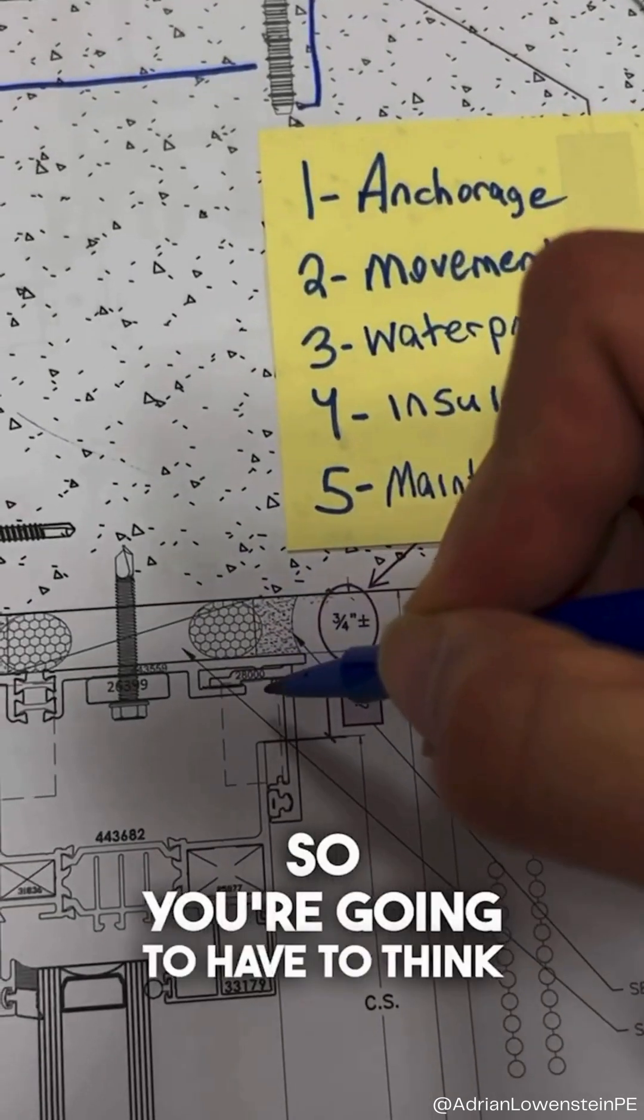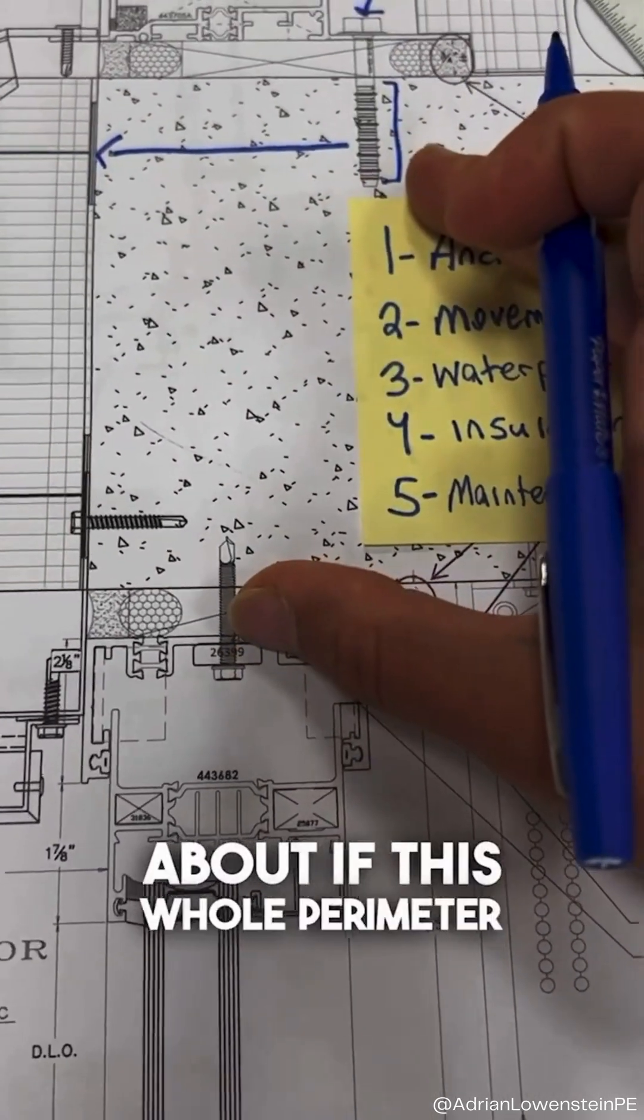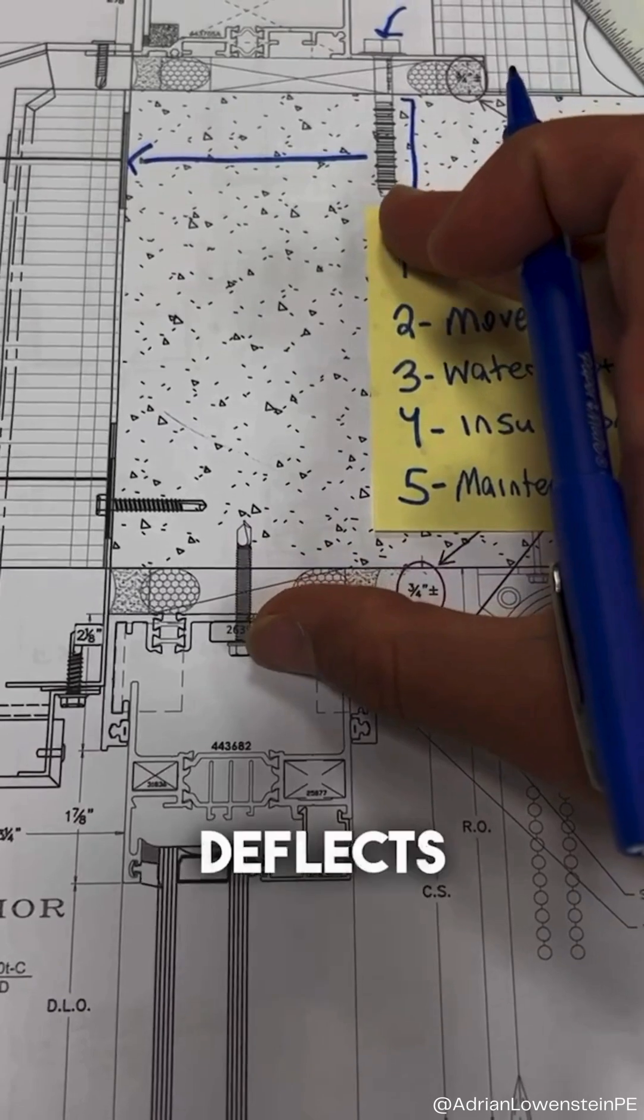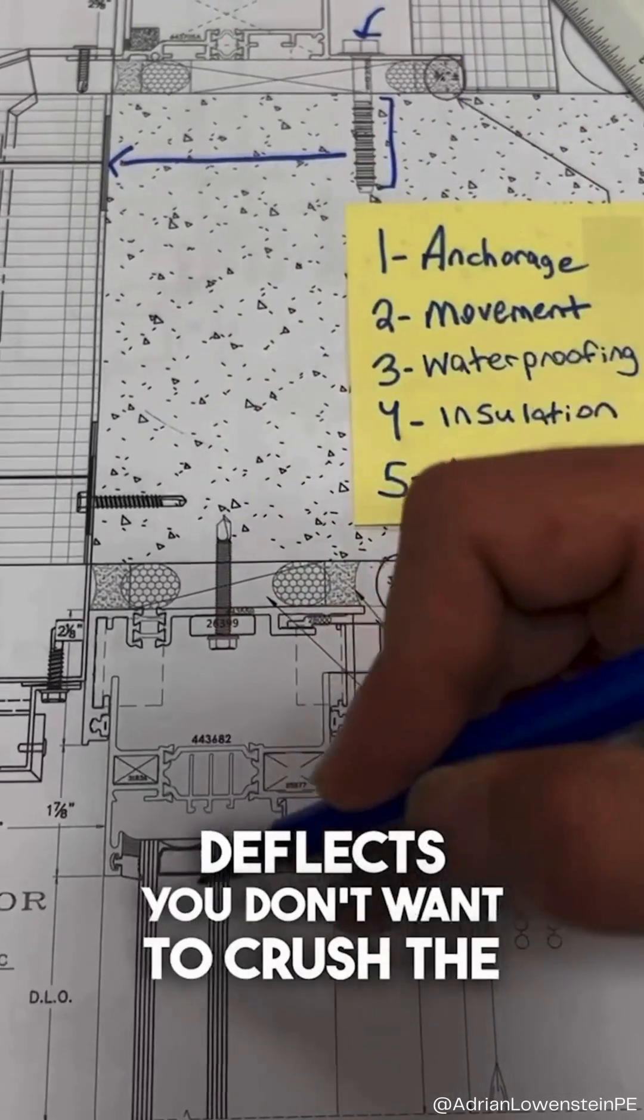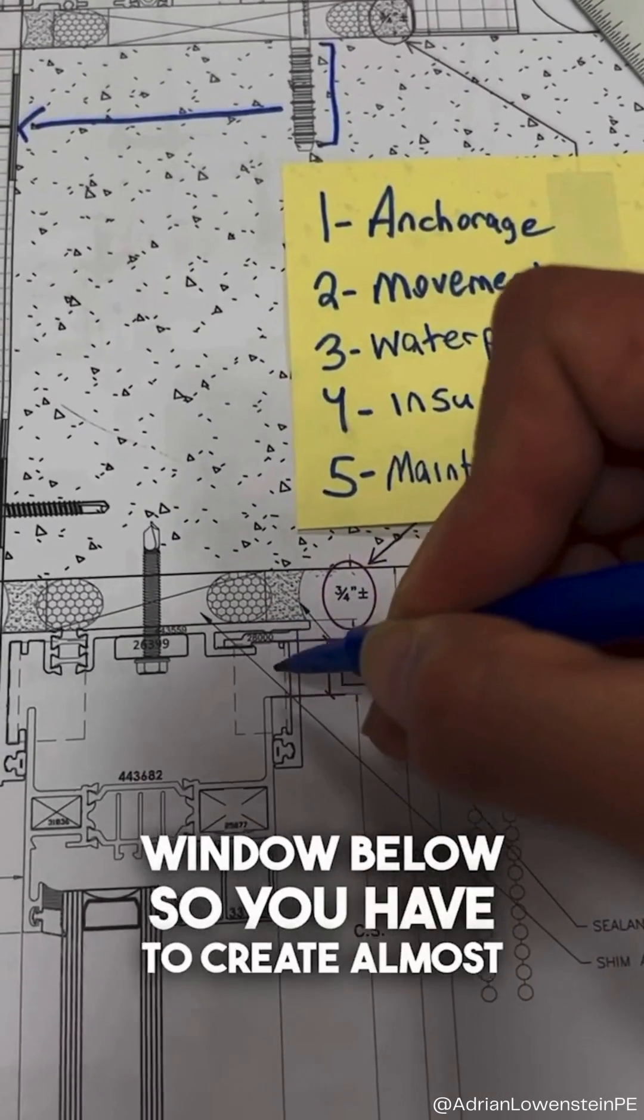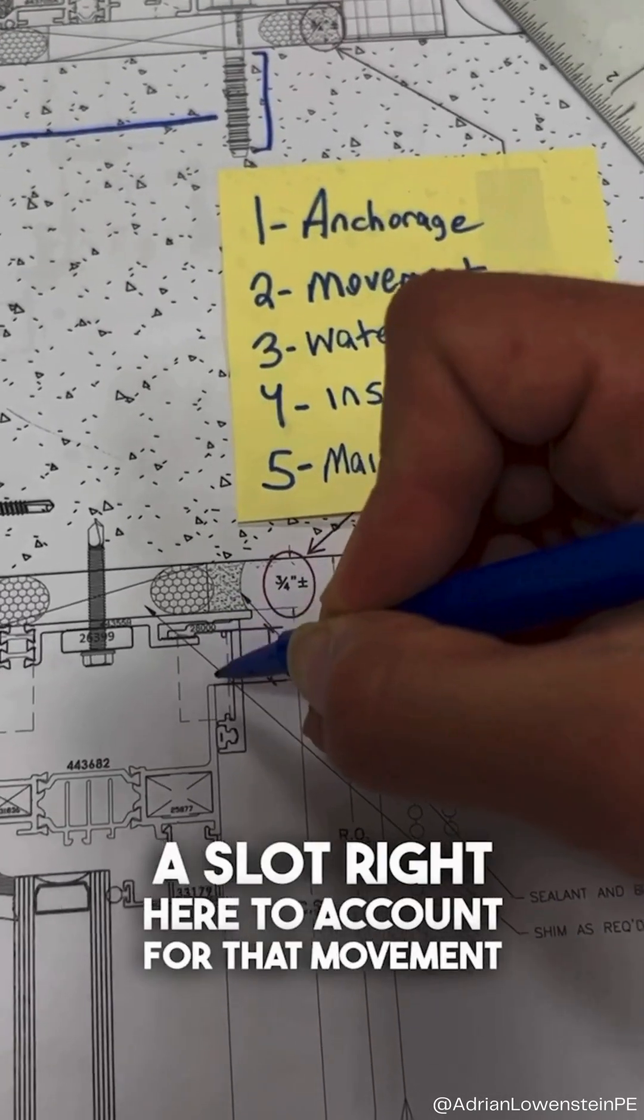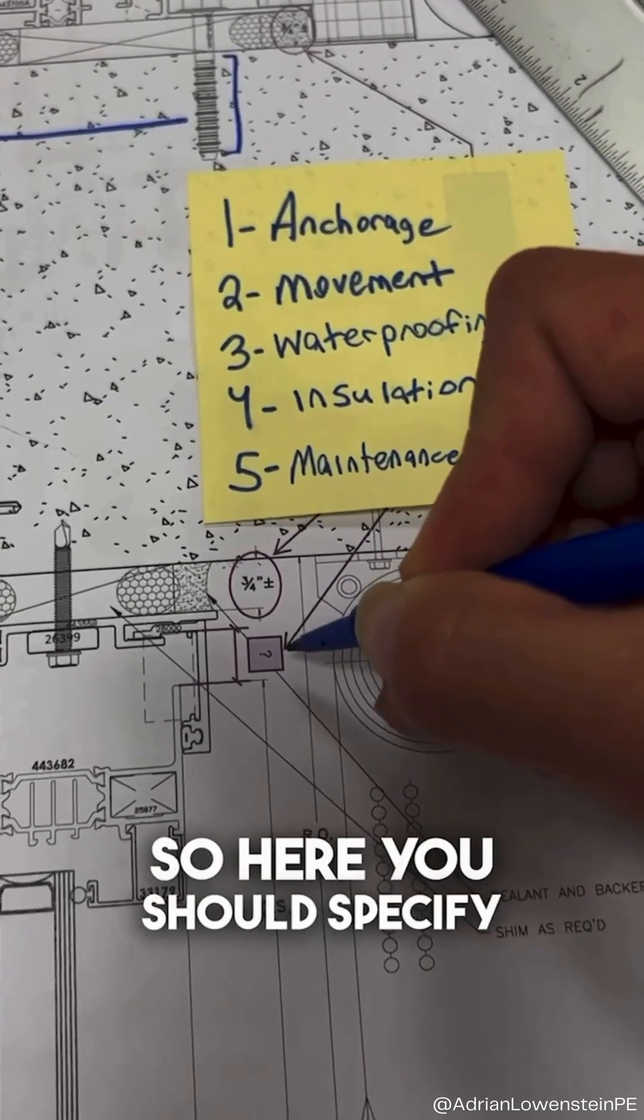So you're going to have to think about if this whole perimeter slab edge partially deflects, you don't want to crush the window below. So you have to create almost a slot right here to account for that movement. So here you should specify or acknowledge a minimum and maximum dimension for the system to move within the receptor track.